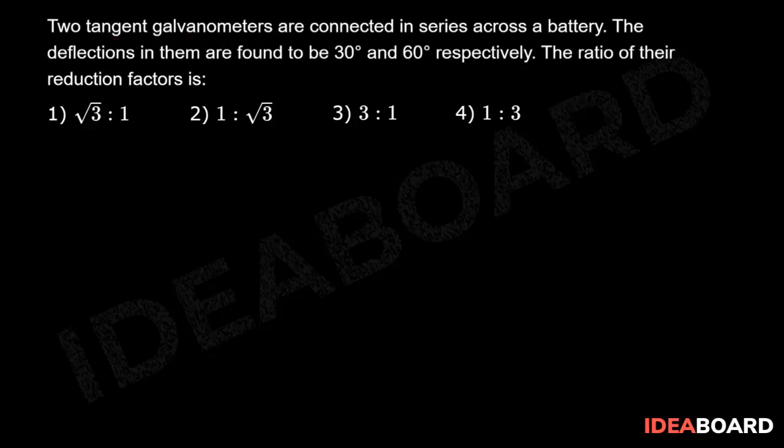Two tangent galvanometers are connected in series across a battery. The deflections in them are found to be 30 degrees and 60 degrees respectively. The ratio of their reduction factors is: